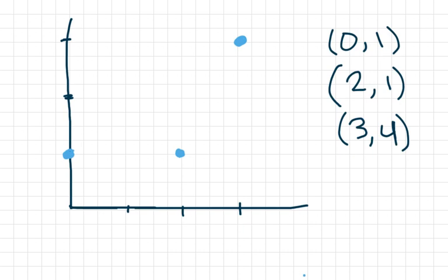We have the point (0, 1), we have (2, 1), and we have (3, 4). So what we're trying to do here is determine what would be a good line of best fit.